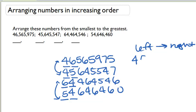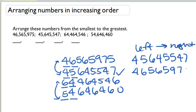So our smallest would be 45, 64, 55, 47. Then 46, 56, 59, 75.